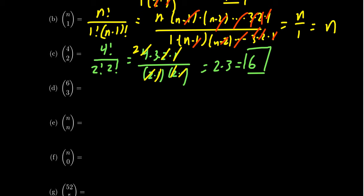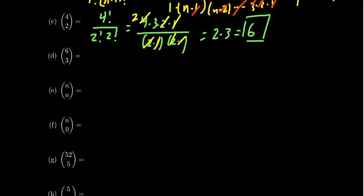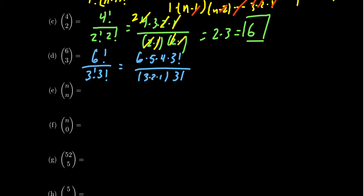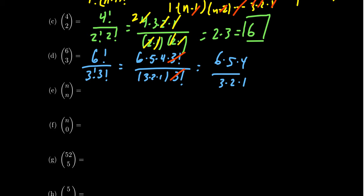Something interesting about these binomial coefficients is that even though there's division, the result will always be a whole number, no matter what. Look at 6 choose 3: you get 6 factorial over 3 factorial times 3 factorial. A useful trick is to write 6 factorial as 6 times 5 times 4 times 3 factorial. The 3 factorials cancel, and then 3 times 2 cancels the 6, leaving 5 times 4, which equals 20. You can always cancel out all divisors on the bottom.